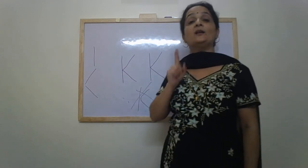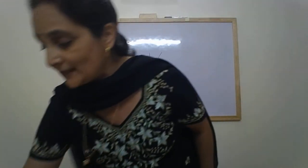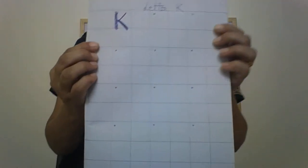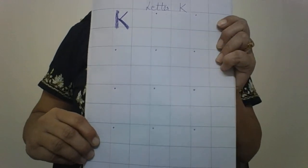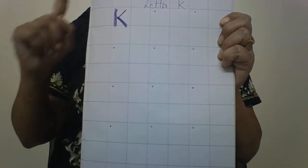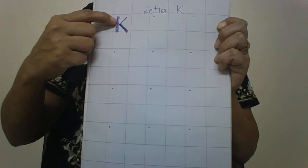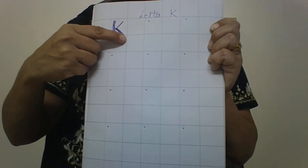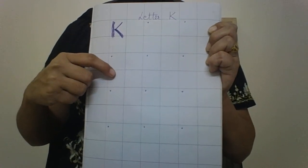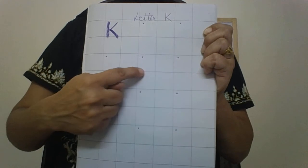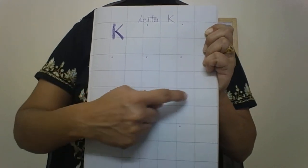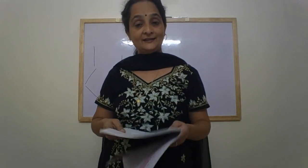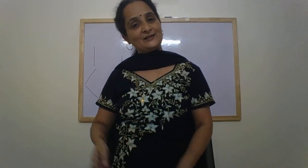K makes the sound K. And don't forget to practice K in your notebook. When you write in the notebook, always say aloud: standing line, slanting line going back and slanting line going in the front is letter K. Write in alternate squares and complete the work and practice writing. Alright. See you in the next video. Bye.